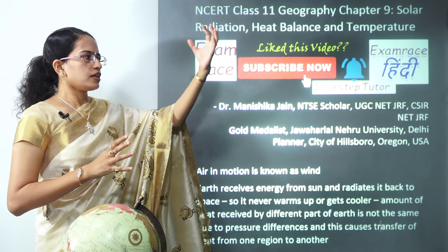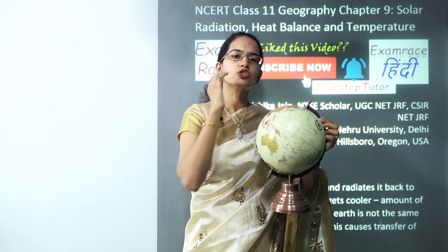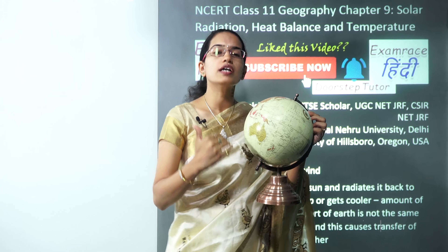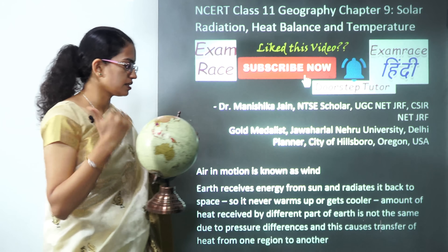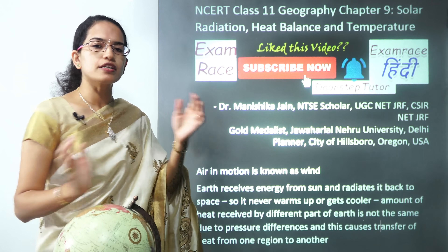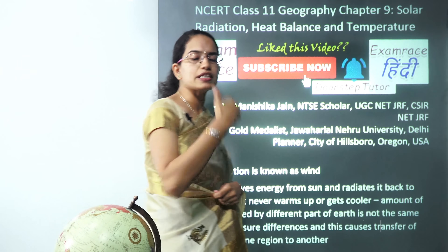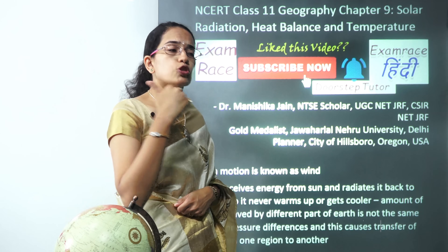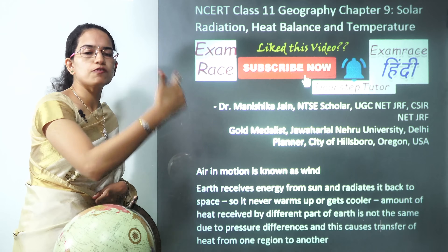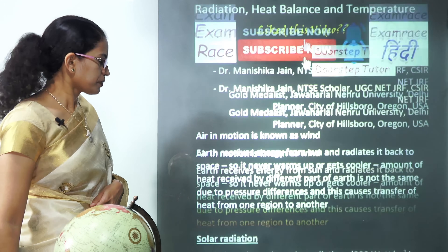The heat coming in is not uniform across the earth. These differences in heat are governed by differences in pressure, and these differences in pressure cause the transfer of heat from one place to another. We have the movement of air from high pressure to low pressure — winds move from high pressure to low pressure. Due to differences in the level of heating, you have different pressure zones, and because of these pressure zones, transfer of heat and energy takes place.